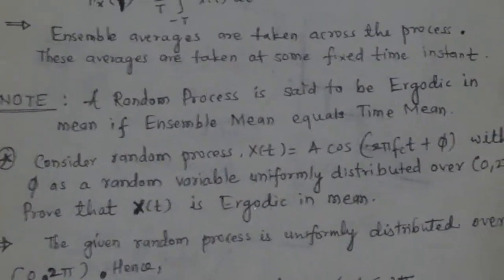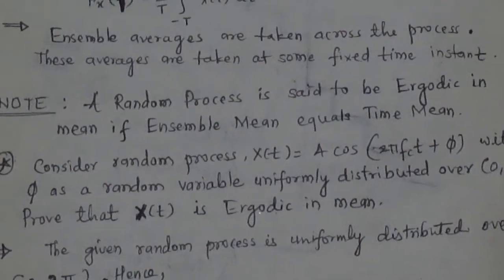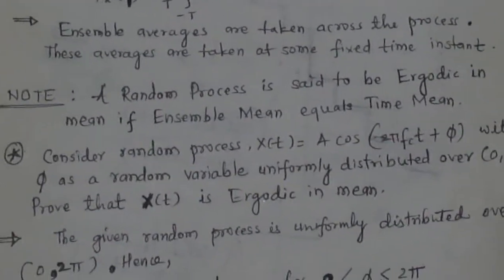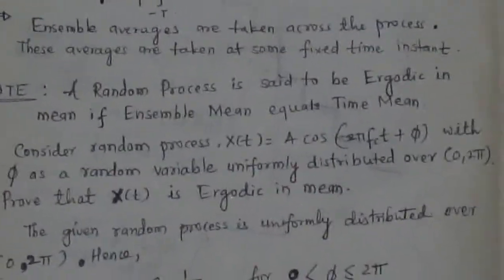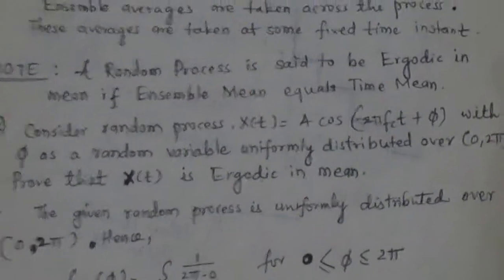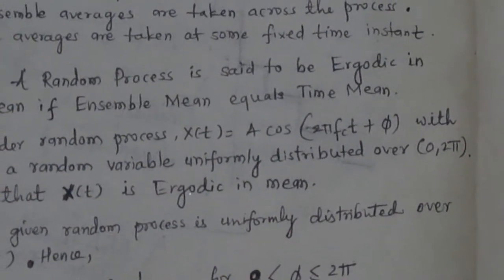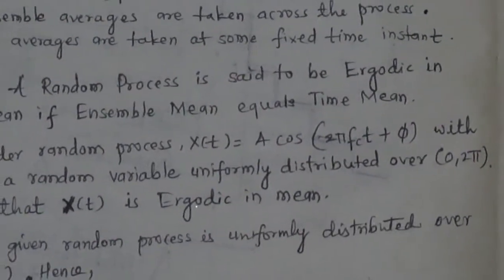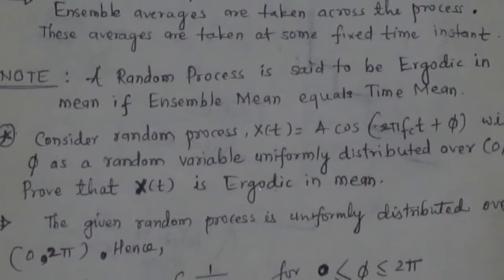A random process is said to be ergodic in mean if ensemble mean equals the time mean. To understand the ensemble mean and time mean, we will consider one example. Consider a random process x(t) = A·cos(2πfc·t + φ), where φ is a random variable uniformly distributed over 0 to 2π. Prove that x(t) is ergodic in mean.